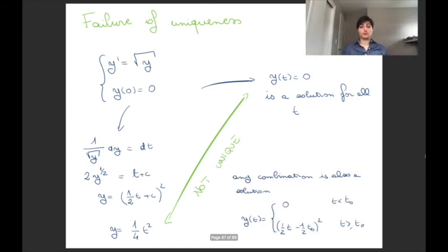Actually it's worse. Any combination of these two solutions is also a solution to the equation. So you have the equilibrium solution that just stays at 0 forever. You have the solution that goes away from 0 as t squared. But you can also wait a while on the equilibrium solution and then take off. And at any point on the real axis you have a solution that takes off at that point.